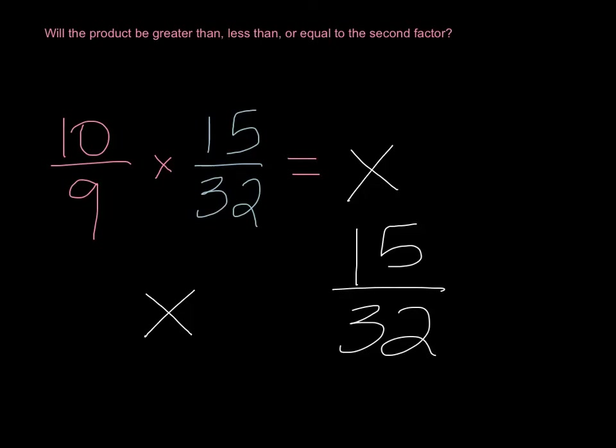We want to look at the first factor, ten-ninths, or one and one-ninth if we reduce it and we take a look at it as a mixed number. Well, if I'm going to multiply the fraction 15 over 32 more than once, so times one and then times one-ninth as well, more than once, that means that I'm going to increase the product. The product is going to be bigger than. The product is going to be greater than.